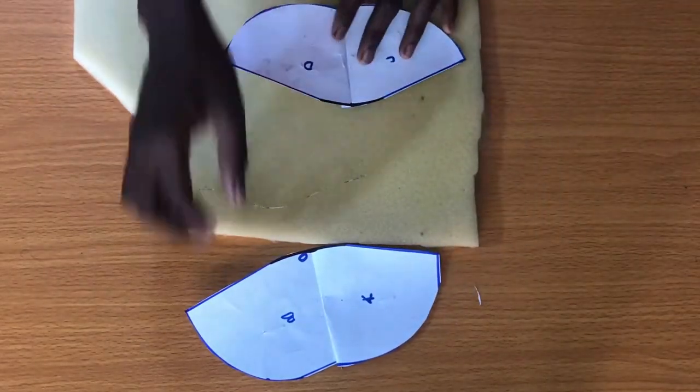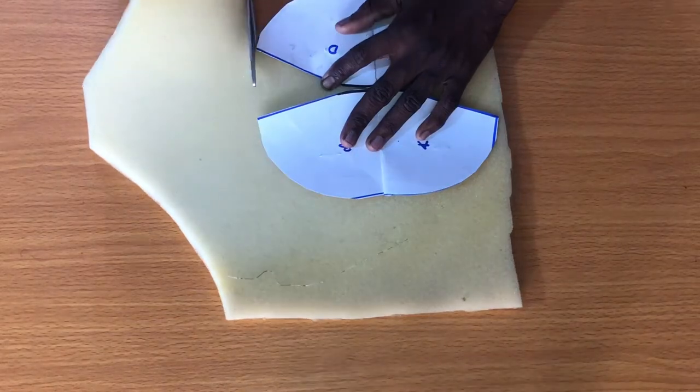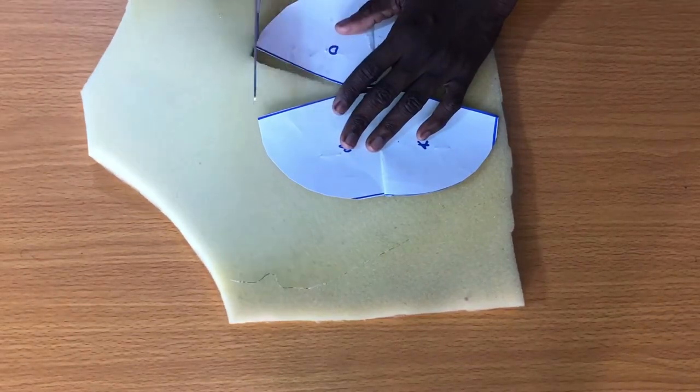Now the next step is to place the pattern on the foam interfacing to trim out as shown.